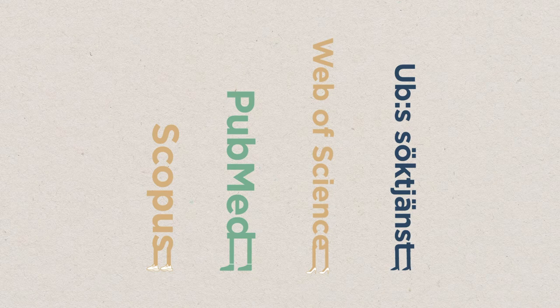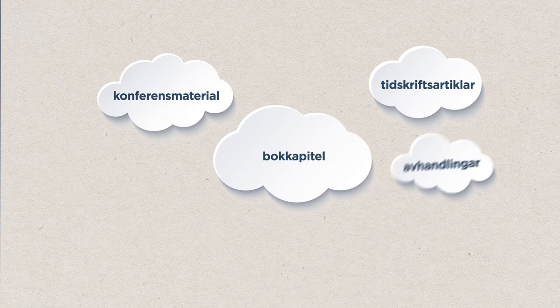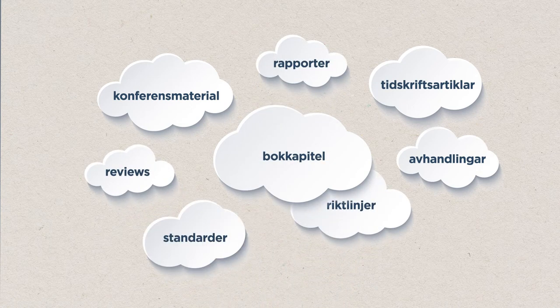When you are searching in a database you will get a selection of scientific material, for example journal articles, book chapters, conference material, and so on. Databases are therefore the right place to search for previous research on a topic.